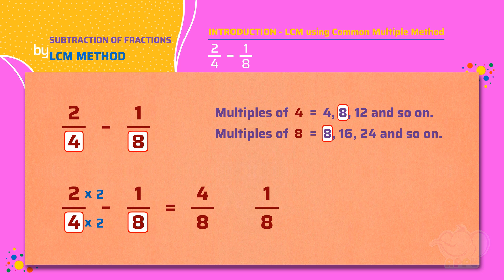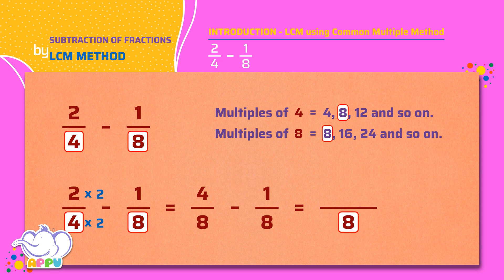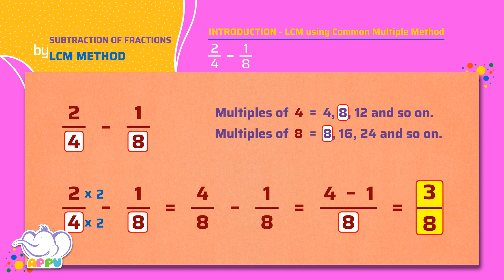Now the denominators are the same for both the fractions, that is 8. We write the denominator as 8 and we subtract the numerators. 4 minus 1 equals 3. The answer is 3 by 8.